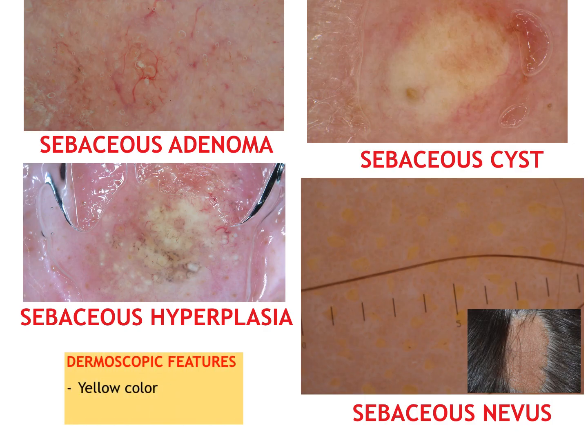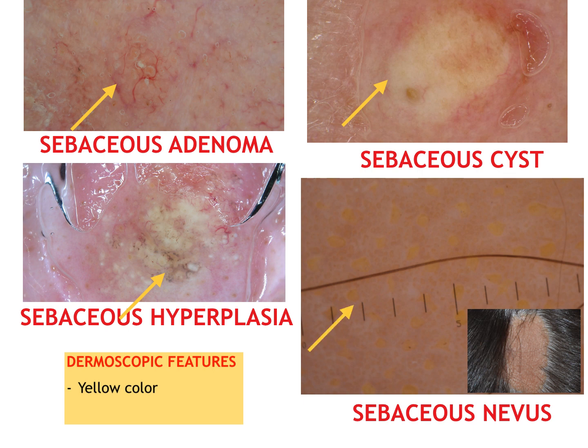Beyond the specific dermoscopic aspect of each sebaceous hyperplastic or tumoral lesion, one of the most common characteristics is the presence of yellow color, visible as yellow globules around follicles in sebaceous hyperplasia, as homogeneous yellowish areas around the comedo-like opening for sebaceous cysts, as multiple pale yellow globules in sebaceous adenoma, and finally as yellow dots for sebaceous nevus.